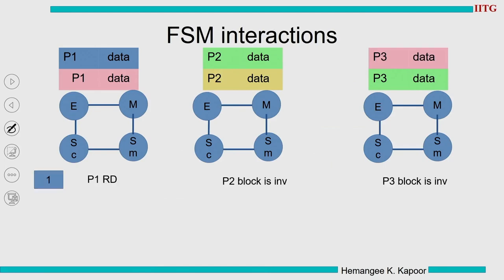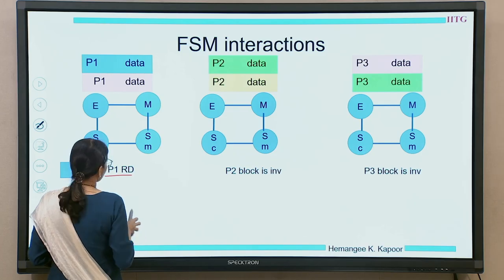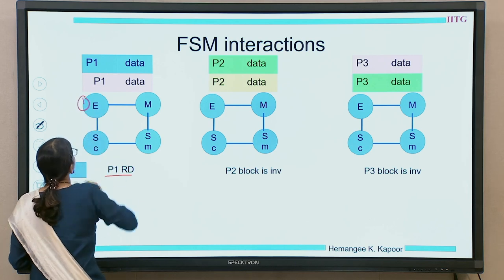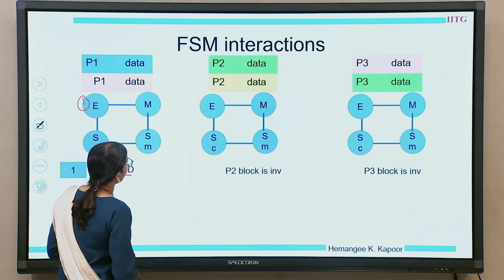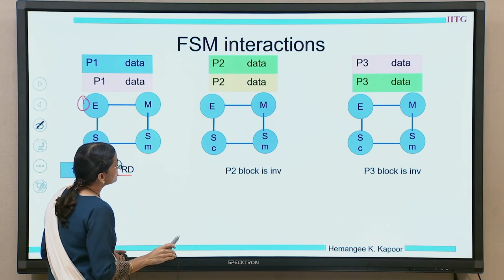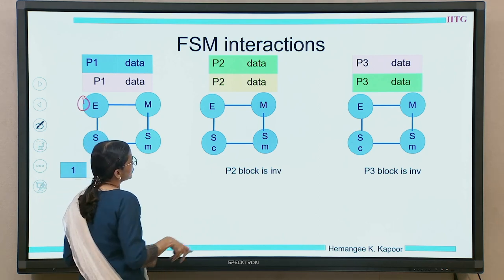A quick example: in step one, P2 and P3 don't have the data block, and P1 initiates the first read. Since P2 and P3 don't have it, they won't raise the shared signal, so P1 loads the block in state E (exclusive). Second event: P2 does a read. P2 sends a request; P1 is a sharer so the wired-OR signal turns true, so P2 loads in SC and P1 also moves to SC.